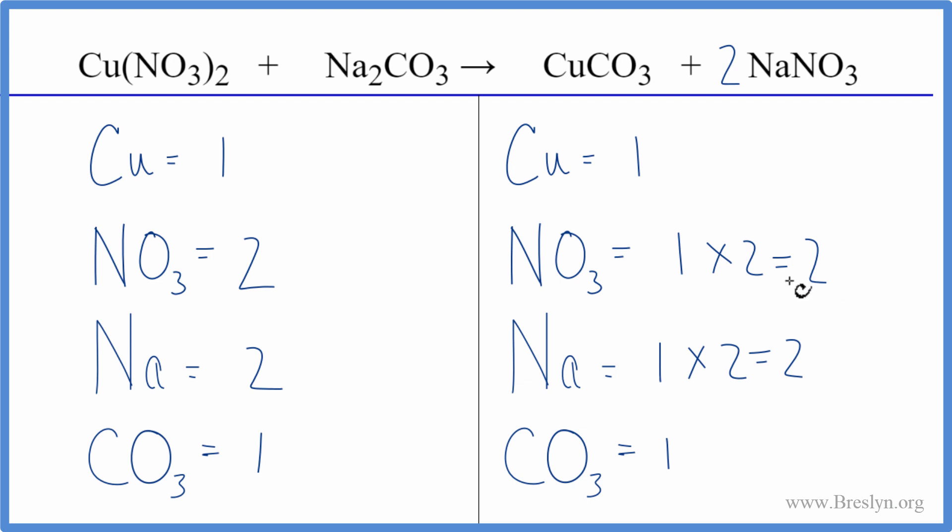So when you have these double displacement reactions, or you have a polyatomic ion that appears on both sides of the equation, like the carbonate here and the nitrate here and here, then you can count it as one thing. You can see how quickly we were able to balance this equation. This is Dr.